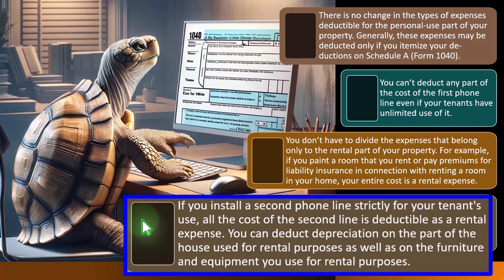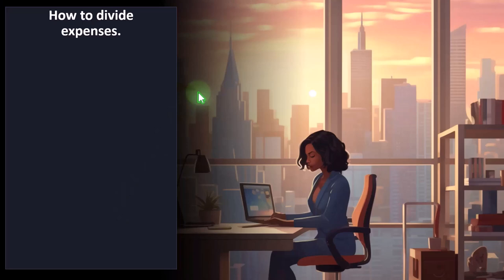You can deduct depreciation on the part of the house used for rental purposes, as well as the furniture and equipment used for rental purposes. If it were your personal residence, it wouldn't be on the books and depreciated because you don't get a tax benefit. But for rental property, you can put that portion on the books and get the benefit of depreciation — remembering that depreciation lowers the basis of the property as you consume it, which means you're more likely to result in a gain when you sell. That could affect the personal-use exemption as well.